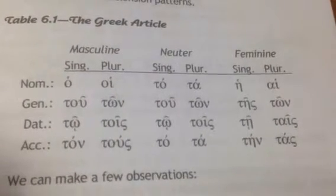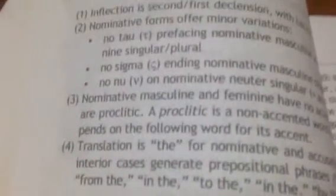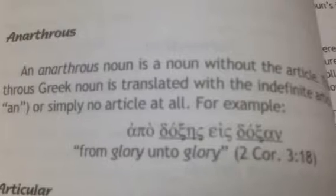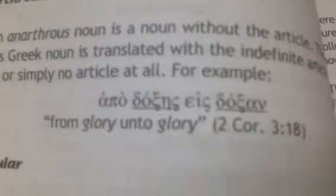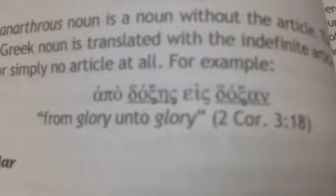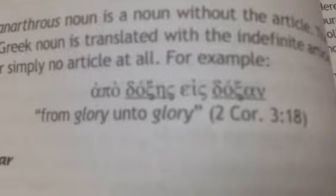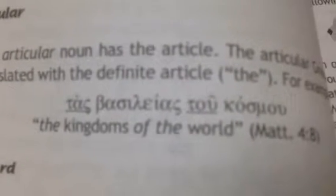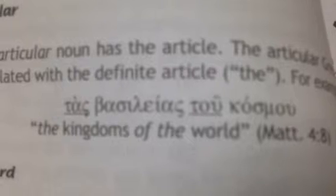That will take a little bit of getting used to. A couple of observations: it can be used in an anarthrous construction — a noun construction without an article — like apo doxēs eis doxan. This means an indefinite article is implied. Translated straight up it would say 'from a glory unto a glory,' but that's not very smooth, so translators render it as 'from glory unto glory.' Or it can be articular, like tas basileias tou kosmou — notice that is the plural, tas basileias, 'the kingdoms of the world,' tou kosmou, in the genitive, 'of the world.'